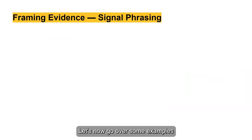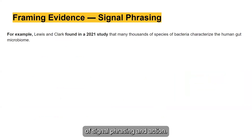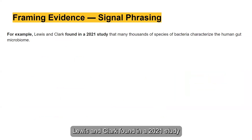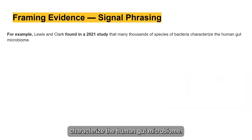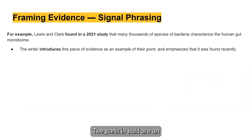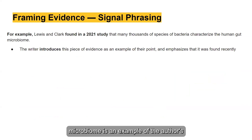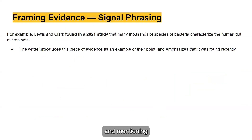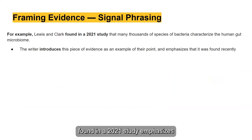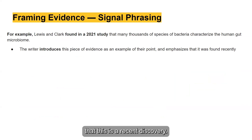Let's look at some examples of signal phrasing in action. Take a look at this first sentence: "For example, Lewis and Clark found in a 2021 study that many thousands of species of bacteria characterize the human gut microbiome." The parts in bold are examples of signal phrasing. "For example" shows that the evidence is an example of the author's previous point, and mentioning the 2021 study emphasizes its recency and significance.